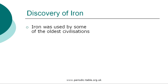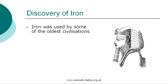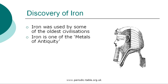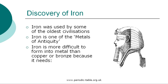Some metals, including iron, were used by some of the oldest civilizations, including the ancient Egyptians, Greeks, and Romans. Right up to the medieval period of the Middle Ages, people believed that only seven metals existed. These seven metals were iron, gold, silver, copper, lead, tin, and mercury, and are referred to as the metals of antiquity. Iron is more difficult to form into metal than copper or bronze, because it needs a much hotter fire and a more complicated process.